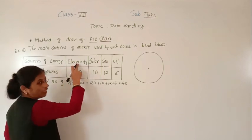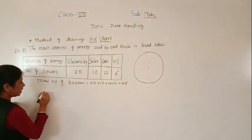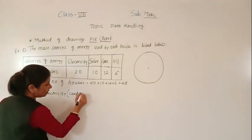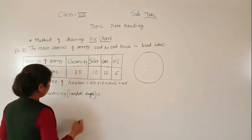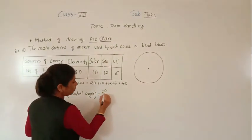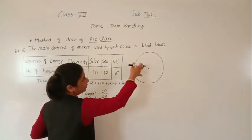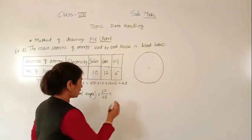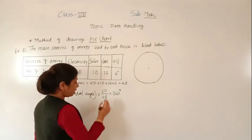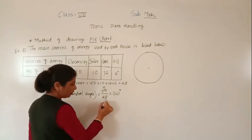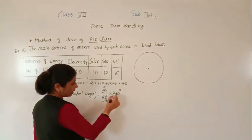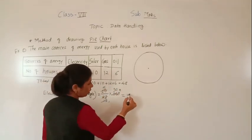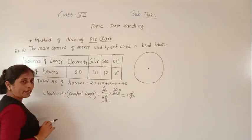To find the central angle for each sector, use the formula: (number of houses / total houses) × 360°. For electricity: 20/48 × 360. Simplifying — 4 fives are 20, and working through the calculation — gives us 150 degrees for electricity.